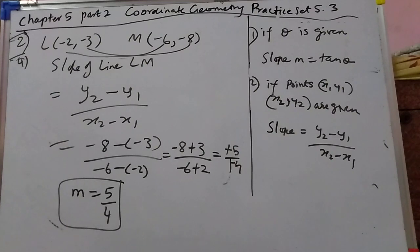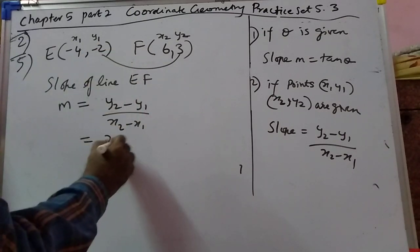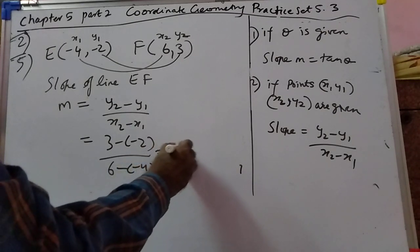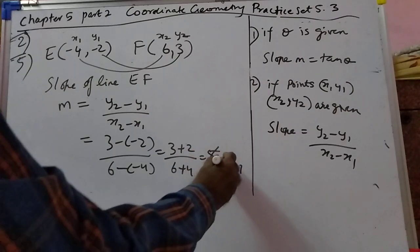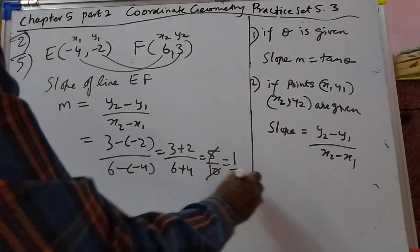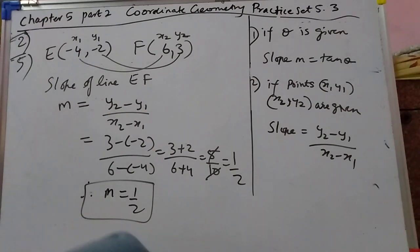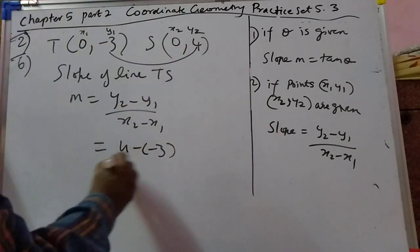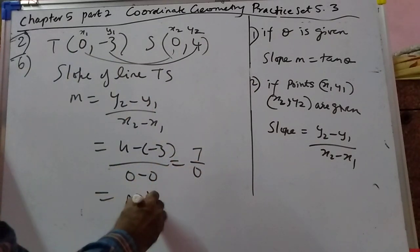Next we will do the fifth problem. Same thing: 3 minus 12 minus 2, over 6 minus 12. That gives 3 plus 2 over 3 plus 4, which is 5 upon 10, that is 1 upon 2. Therefore m is equal to 1 by 2. Now let's do the sixth problem: 4 minus 1 minus 3, over 0 minus 0. That gives 7 upon 0, which is not defined.